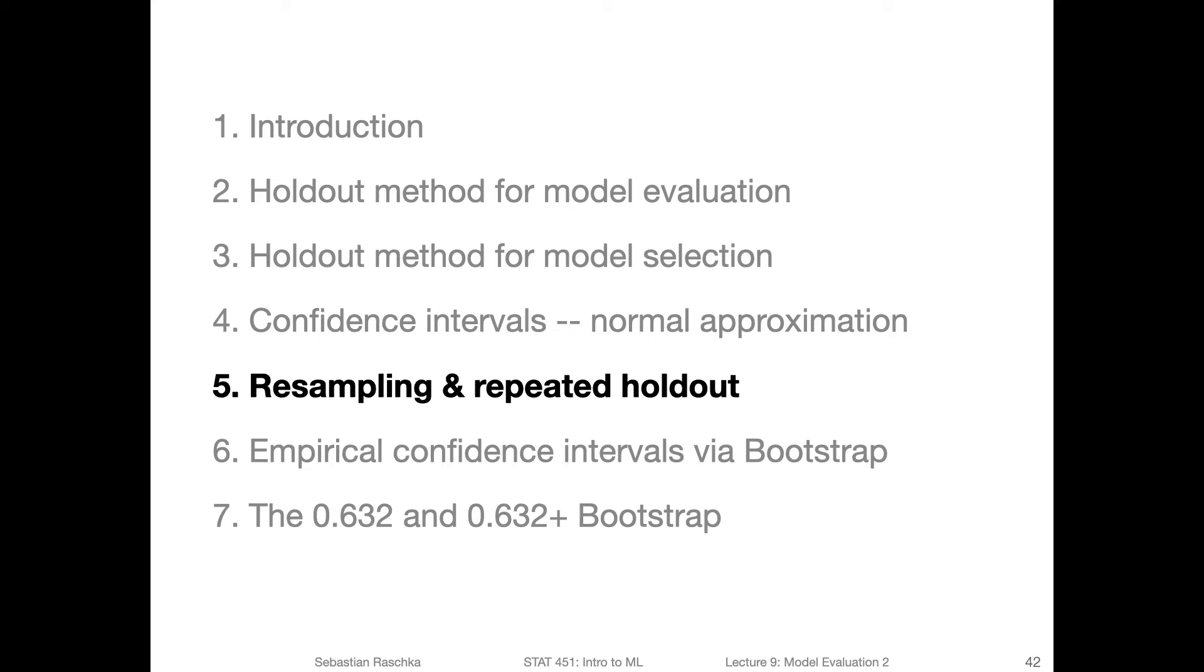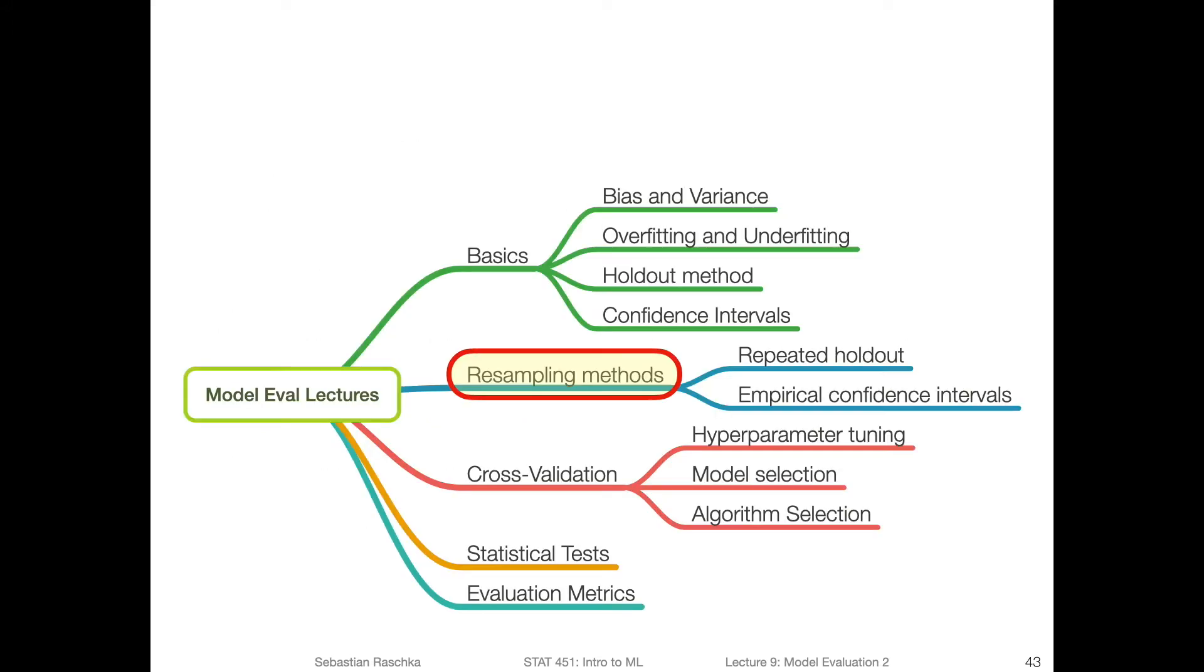Yes, so in this video we are going to talk about resampling and the repeated holdout method. Previously, we talked about the regular holdout method where we divide a data set into a training and a test data set, and then we talked about how we can do the normal approximation method to construct confidence intervals for the performance estimated on the test set. Now we are taking a look at resampling methods, in particular the repeated holdout method, and then we are going to talk about empirical confidence levels using resampling methods in the next video.